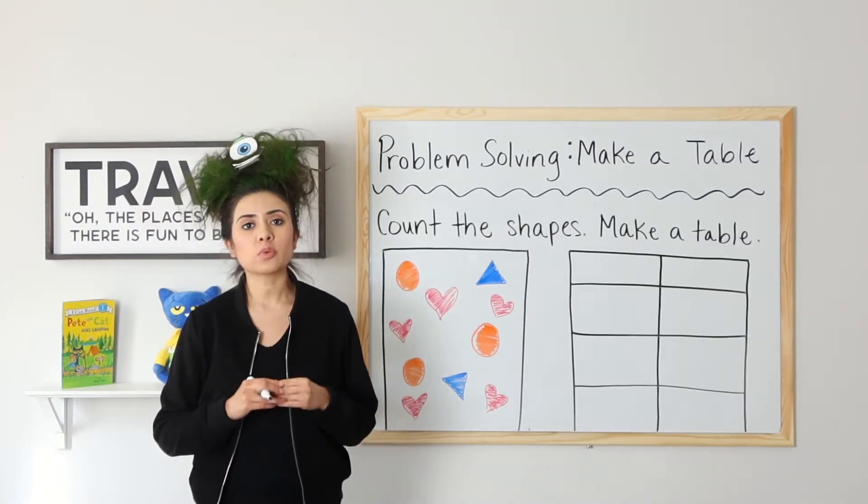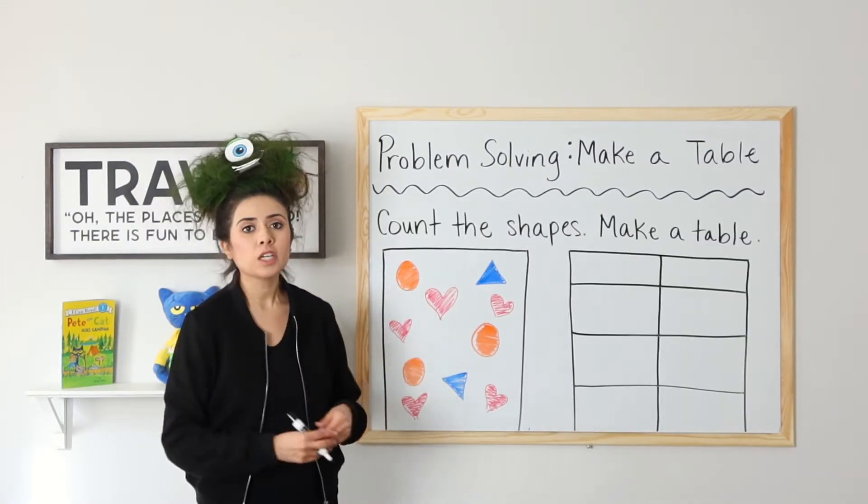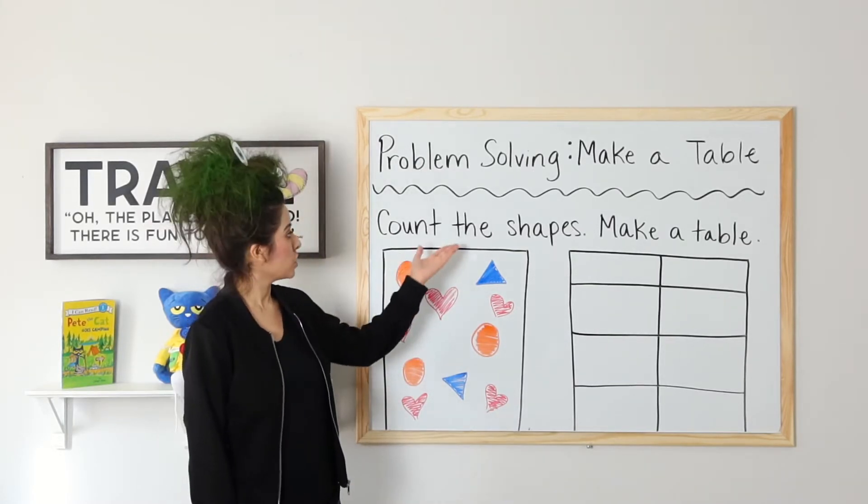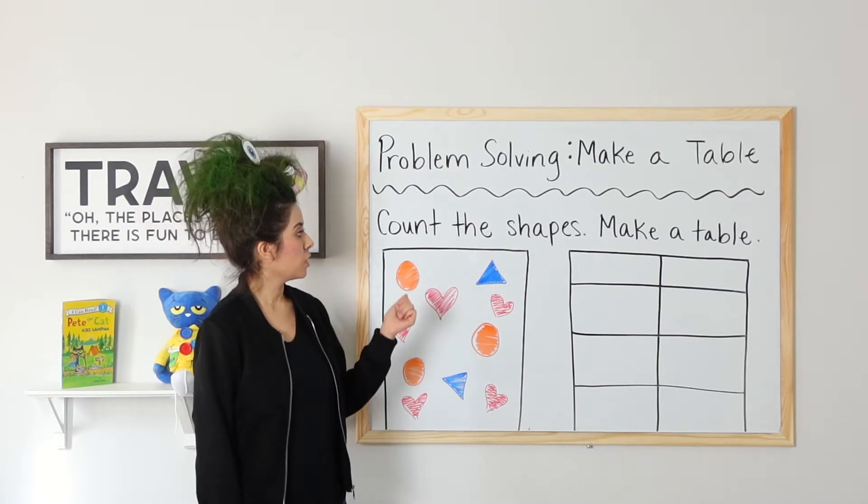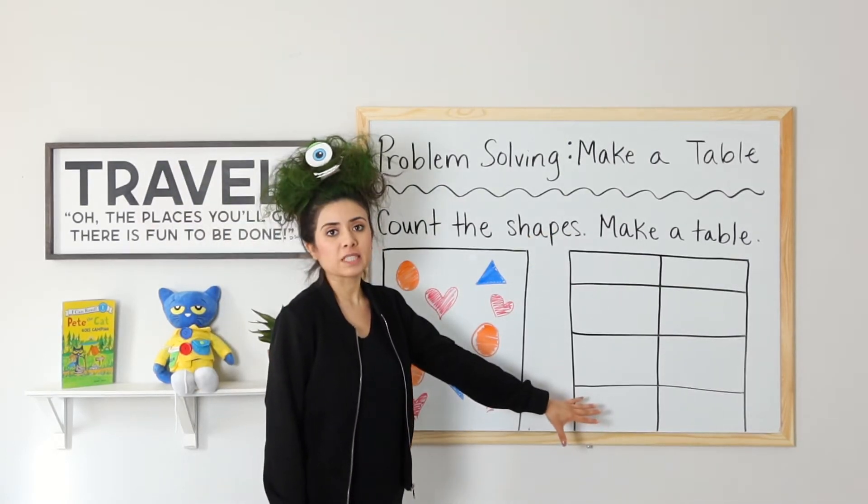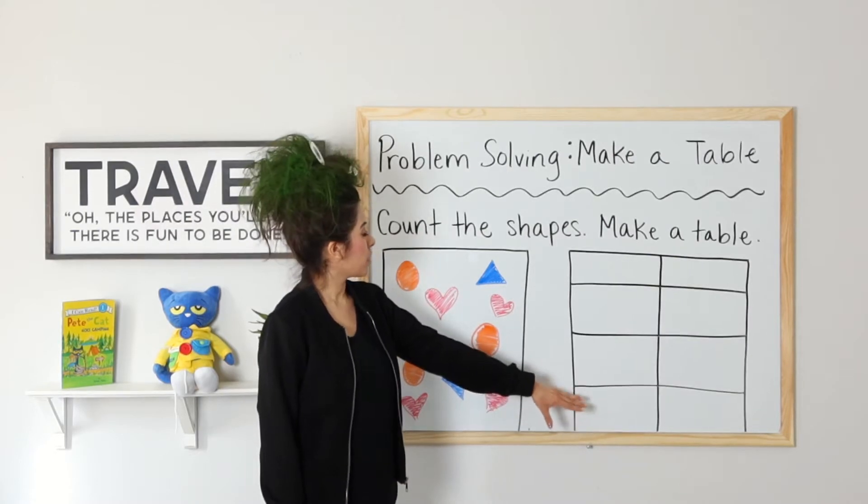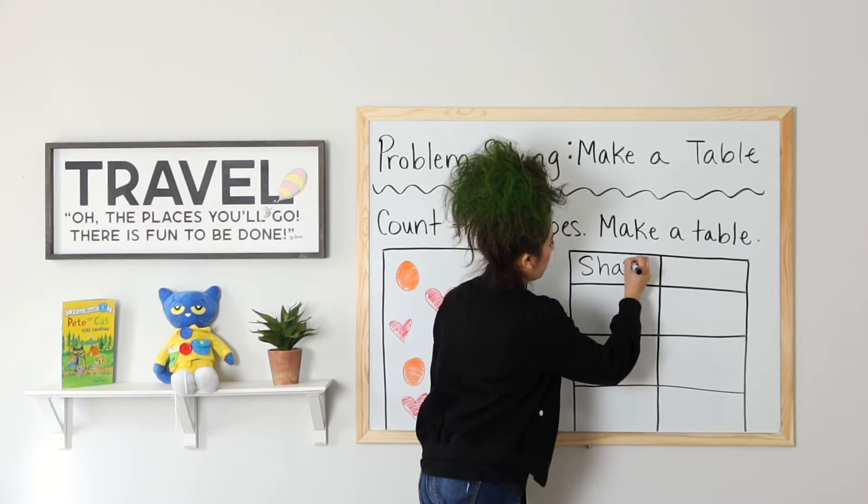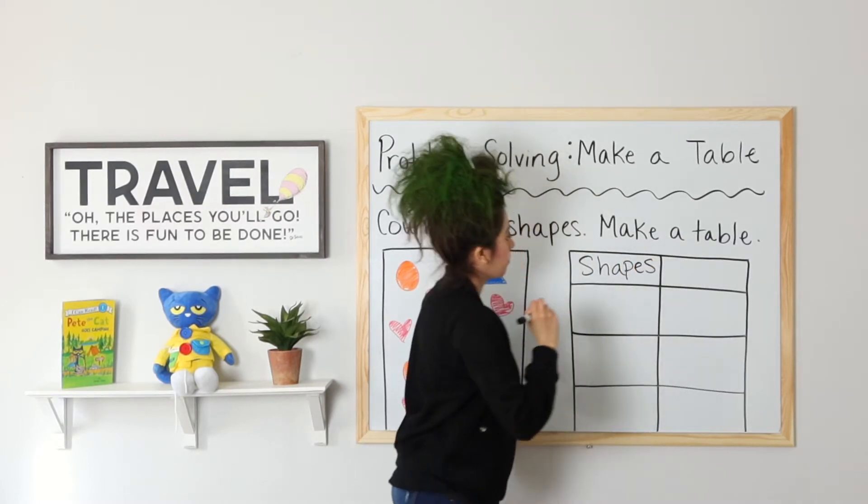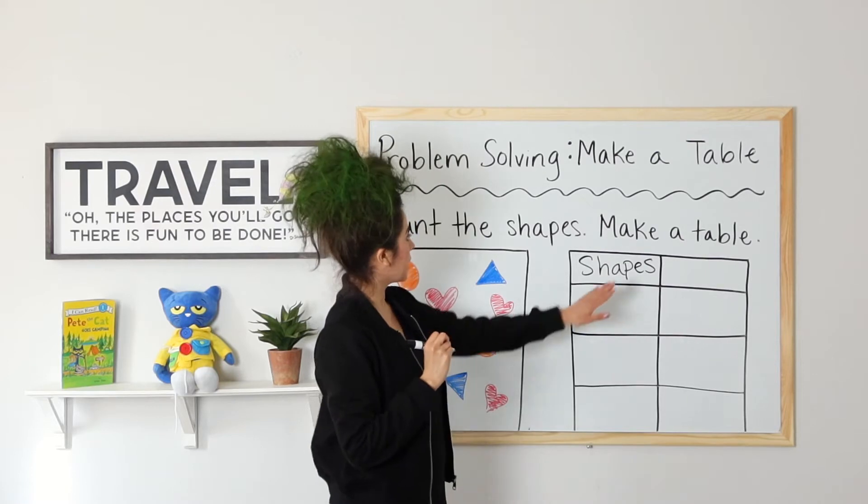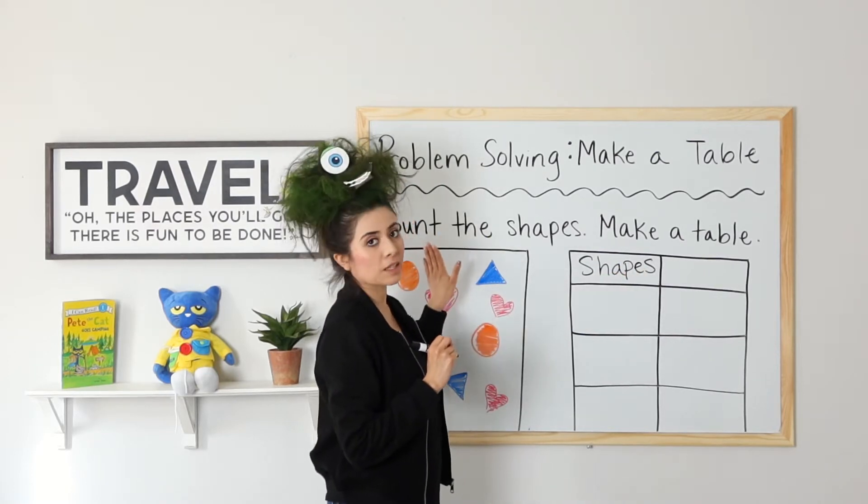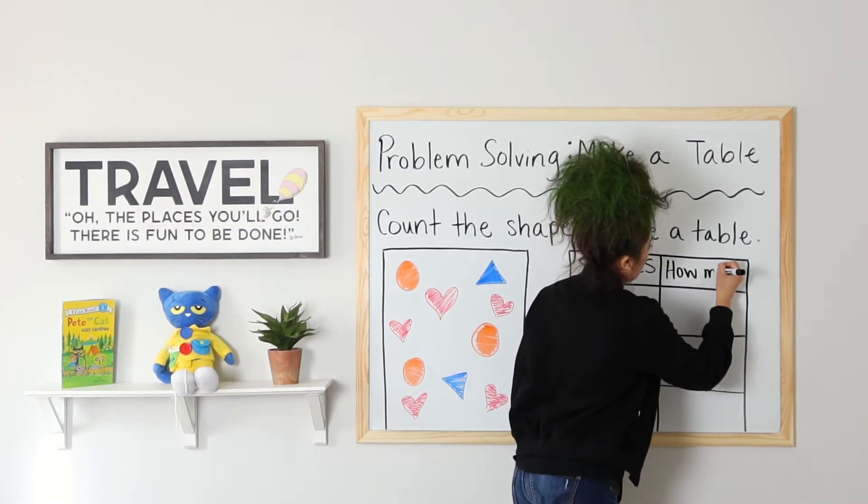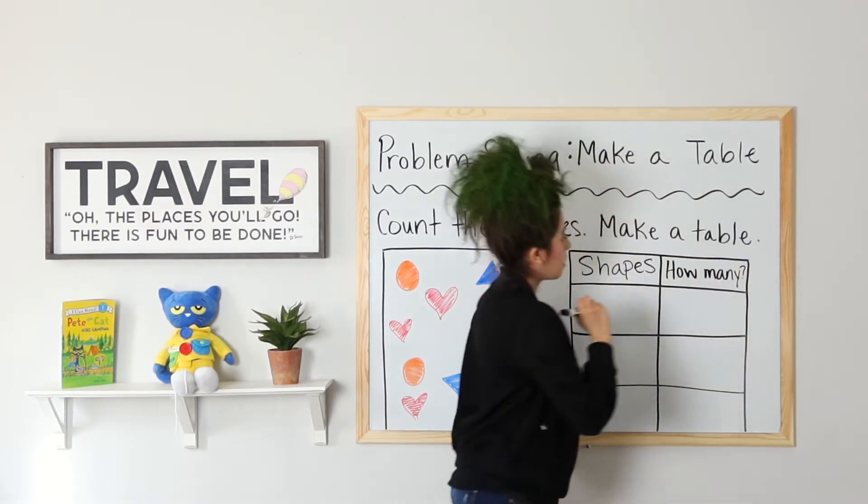Okay, before we get into the actual word problems, let's go ahead and work with this example just so that we're sure we know how to fill in a table. So it says count the shapes, make a table. So I have already set up the layout of my table. I know that I'm going to count shapes. So I'm going to name my first column shapes and then I'm going to say how many, because they're telling me to count them.